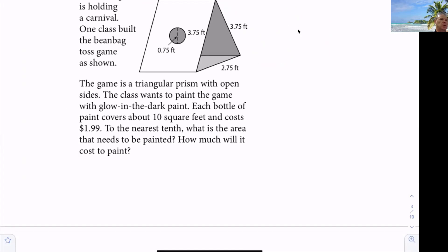Number nine. Yeah, this one, let's just talk about it because some of these are from the book and the book has made some, you know, they're not always clear. So the class wants to paint the game with glow-in-the-dark paint. Each bottle of paint covers about 10 square feet and costs $1.99. To the nearest tenth, what is the area that needs to be painted?